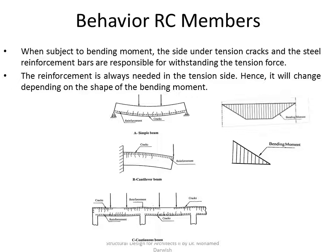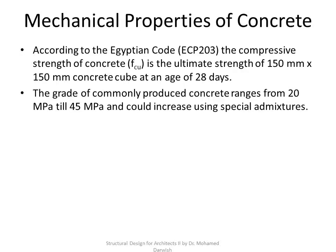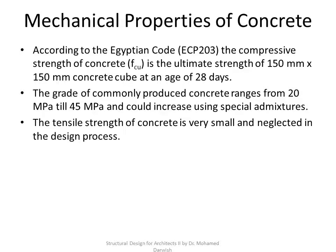The mechanical properties of concrete mainly depend on its characteristic compressive strength, which is measured and tested at the age of 28 days after testing concrete cubes till failure. We call this the grade of concrete, because it classifies the strength. It could range from 20 to 45 megapascals, and you could have more than that if you use admixtures.